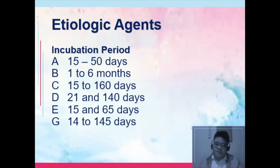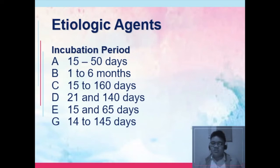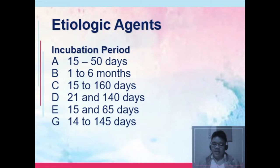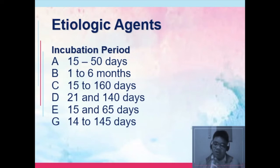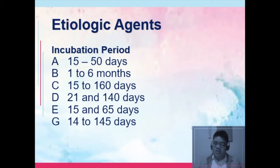Regarding the etiologic agents, look at the incubation periods for hepatitis A, B, C, D, E, and G. These are important to determine if the patient is really at risk of having a specific type of hepatitis after a certain period of exposure. The incubation period is the difference between the time the virus entered the body and the time the patient will have manifestations. For hepatitis B, the incubation period is one to six months. So if a client wants to trace the source of hepatitis B, they need to recall sexual intercourse and blood transfusion history for the past six months.